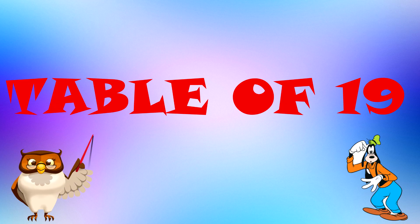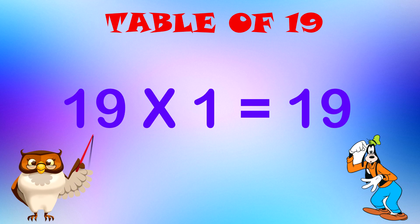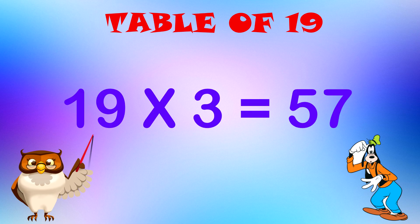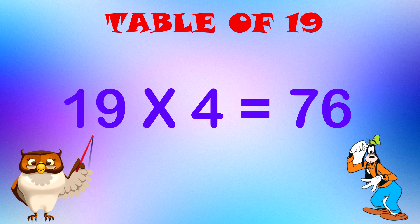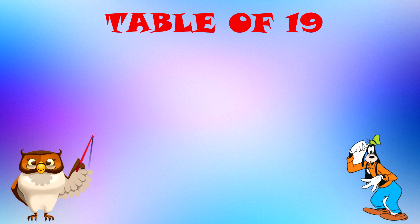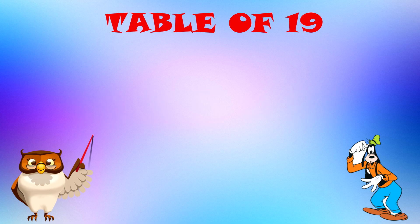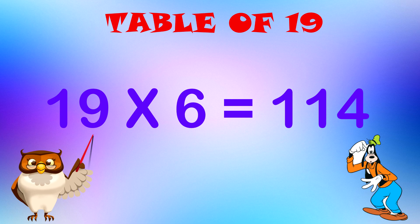Table of 19. 19 x 1 equal to 19. 19 x 2 equal to 38. 19 x 3 equal to 57. 19 x 4 equal to 76. 19 x 5 equal to 95. 19 x 6 equal to 114.